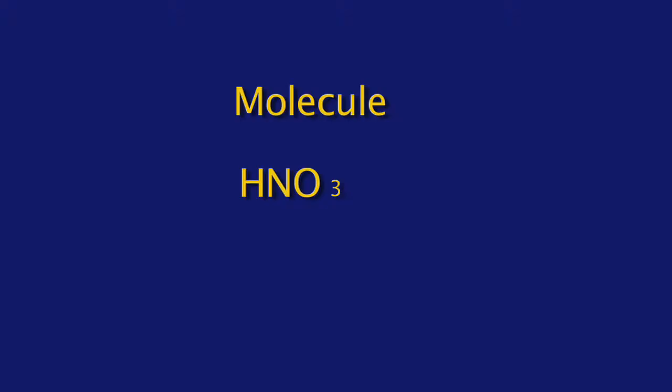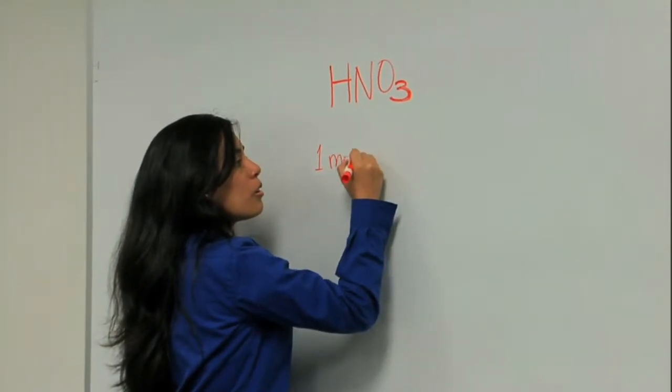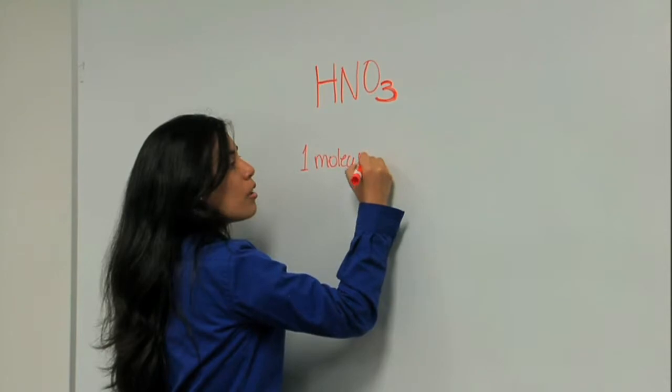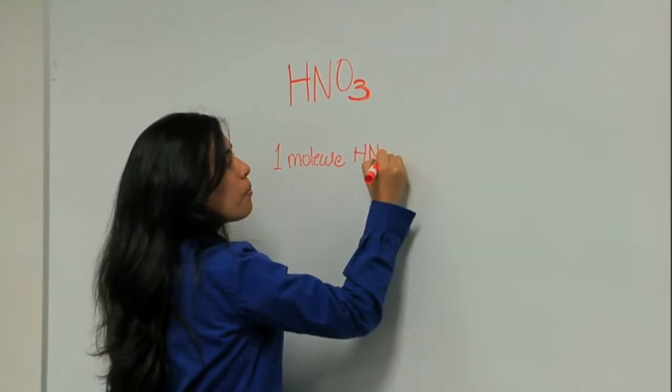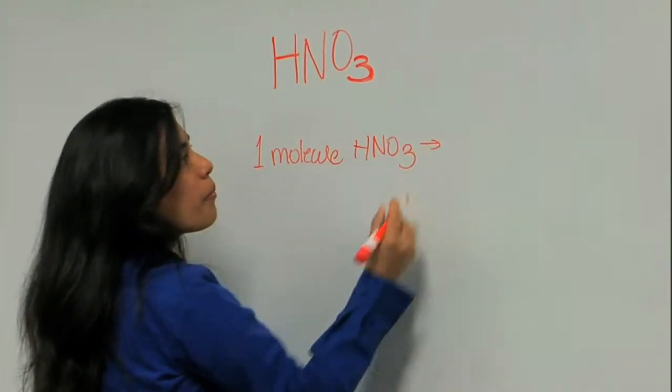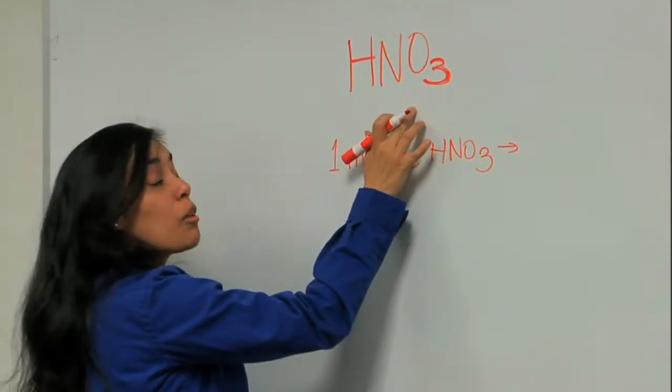Let's look at this molecule here. It's nitric acid. In one molecule of nitric acid, I have hydrogen, nitrogen, and oxygen atoms.